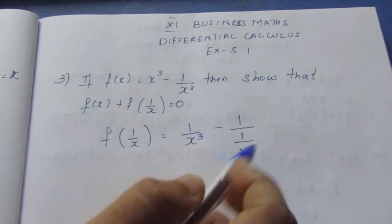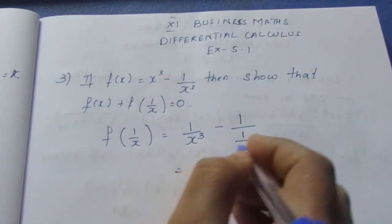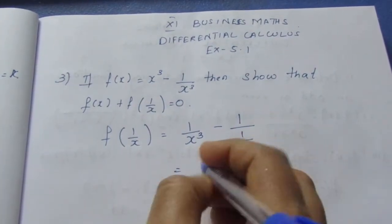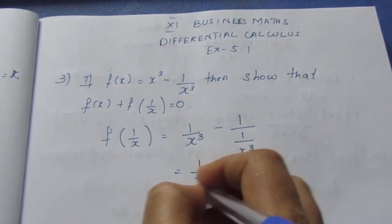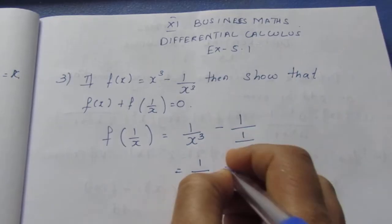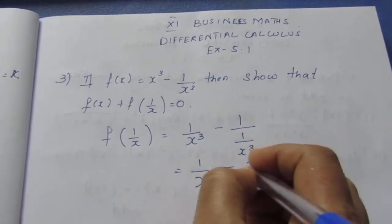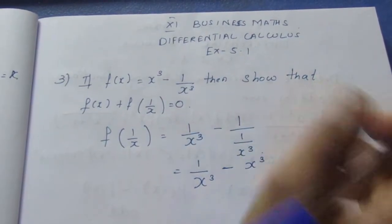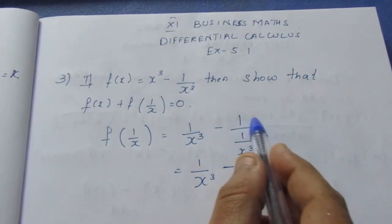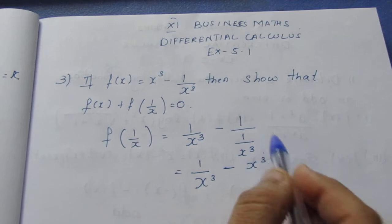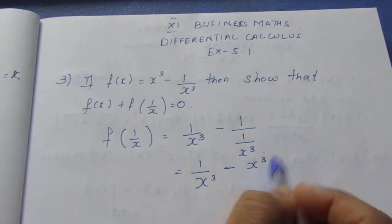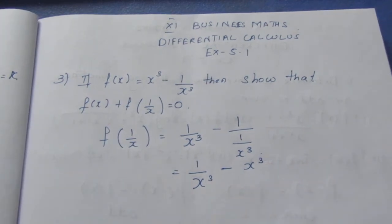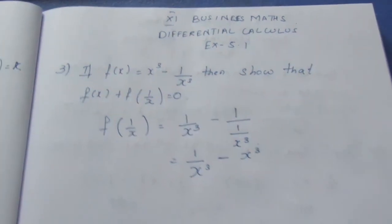Now, this becomes 1 by x cube minus x cube. Taking the reciprocal of 1 by x cube gives x cube, so f of 1 by x equals 1 by x cube minus x cube.